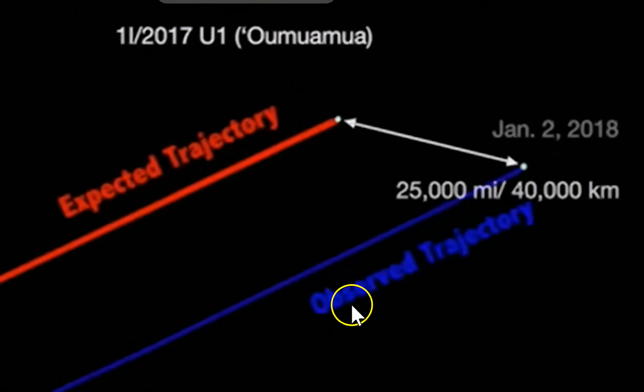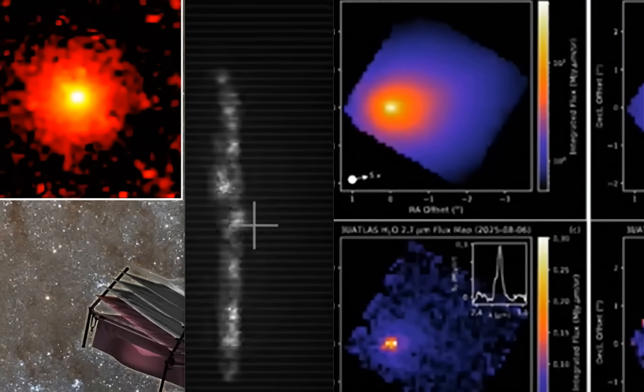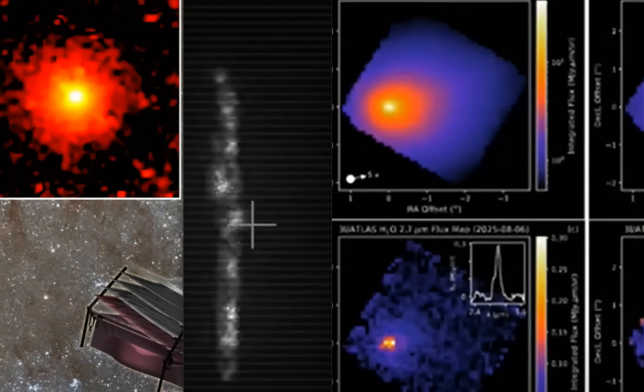This shows that there was something off about it, and it was long, cylindrical, metallic in nature, and seems to have been intelligently controlled. Now, remember, Oumuamua stands for scout, and you send a scout out ahead of the larger military crew.